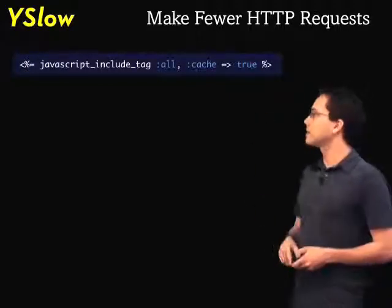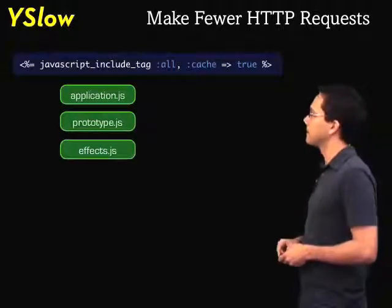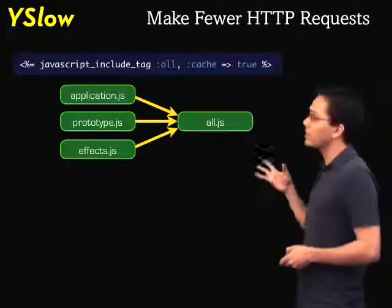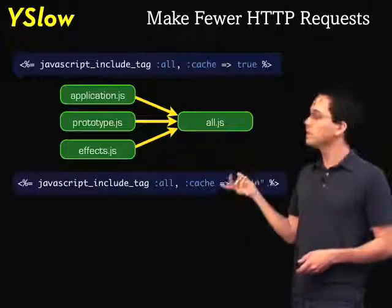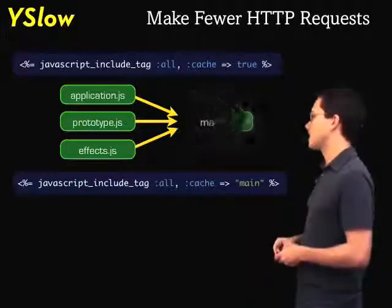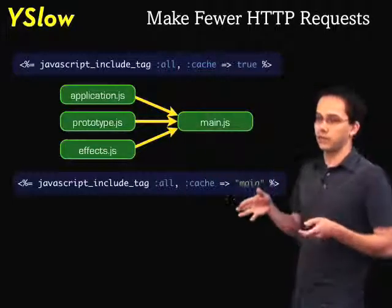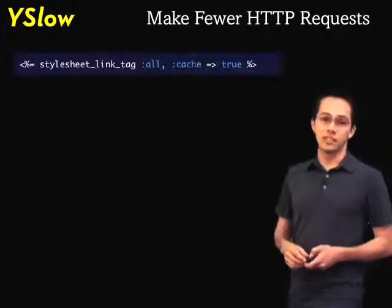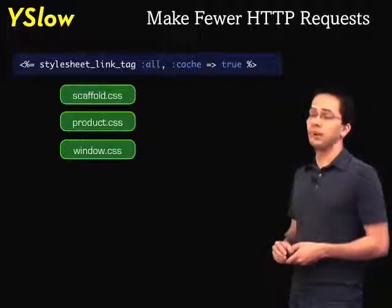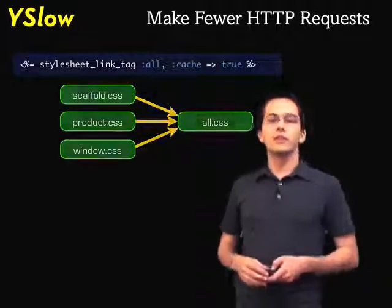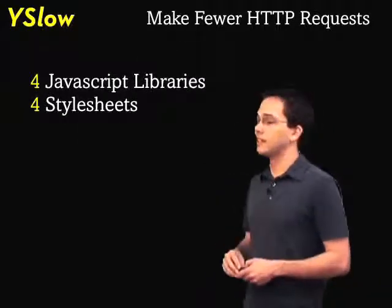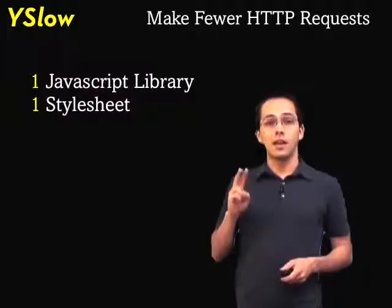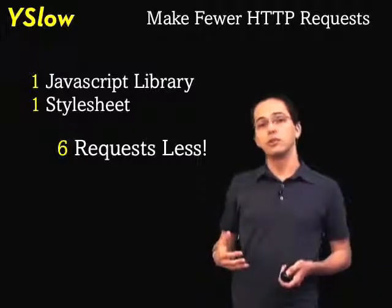If I run this line in my code, it's basically going to include all the JavaScripts in my JavaScript directory. Then in production, when I run this code, it's going to combine all that JavaScript into a single file called all.js. We can also customize this by specifying the name of the cache — for example, the cache file created would be main.js. We can also specify a bunch of specific JavaScripts to combine into a single file. The same thing goes for style sheets: it goes to the style sheet directory, picks out all style sheets, and in production combines them into a single file called all.css. So in a Rails application with four JavaScript libraries and four style sheet libraries, in production the client would only see one JavaScript library and one style sheet library — saving six requests total and speeding up our website.